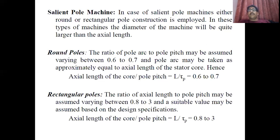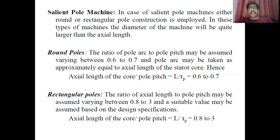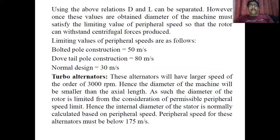When calculating the main dimensions — diameter and length — the problem will state whether the machine is salient pole or non-salient pole, and whether it is round pole or rectangular pole. If a numerical problem does not mention round pole or rectangular pole, you should assume rectangular pole. That means for separation of D and L you choose a value between 0.8 to 0.3; an intermediate value can be chosen as needed.